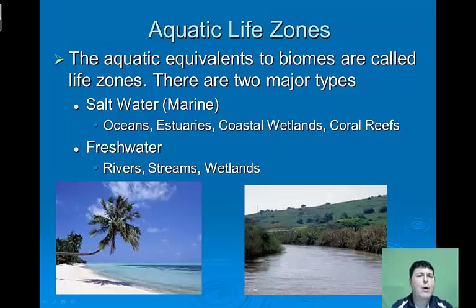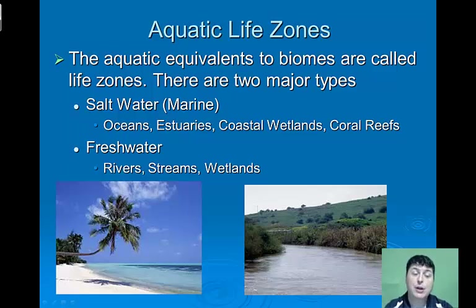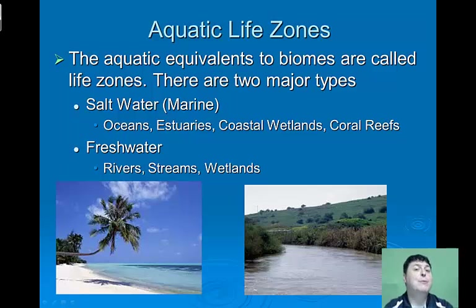The aquatic equivalents to biomes are called life zones. There are two major types: saltwater and freshwater. The saltwater or marine life zones include oceans, estuaries, coastal wetlands, and coral reefs.